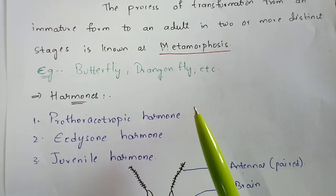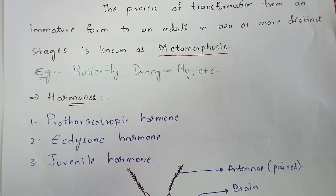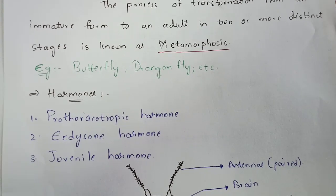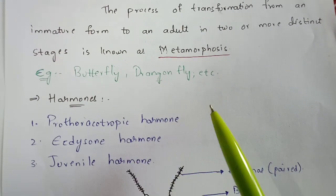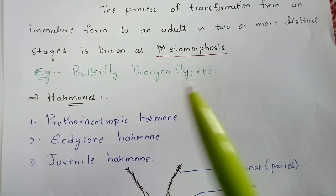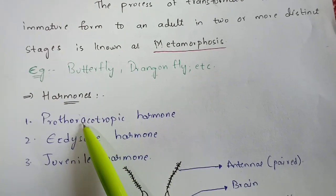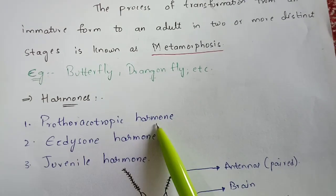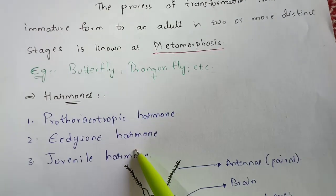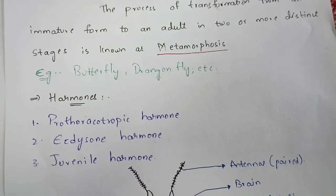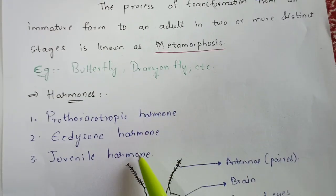Normally, for the process of metamorphosis — for the process of moving from one stage to another stage — hormones are very much required. There are three types of hormones which mainly play a major role in this metamorphosis process: prothoracotropic hormone, ecdysone hormone, and juvenile hormone. These three are the most important hormones, and I am going to explain them.